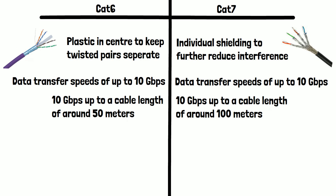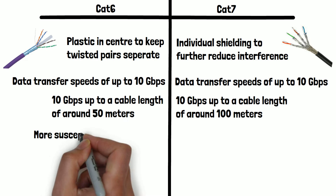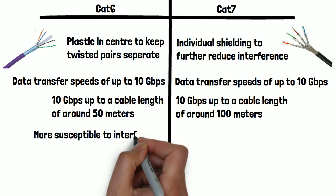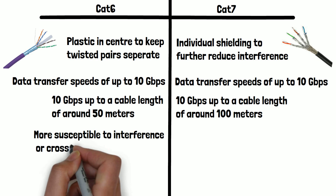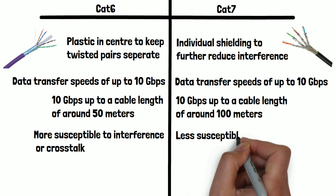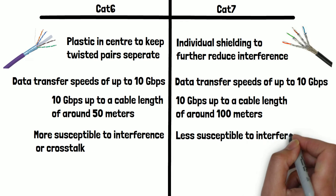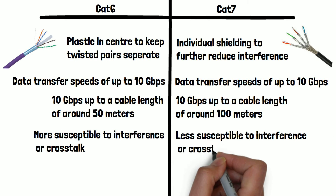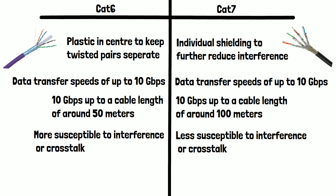Now let's look at interference, also known as crosstalk. CAT6 cables are more susceptible to interference and crosstalk compared to CAT7 cables. This means that in high traffic or noisy environments, CAT6 may experience more signal degradation, potentially leading to a complete loss of signal.